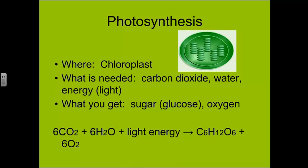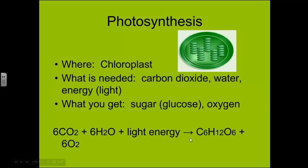Let's go through the very basic who, what, when, where. Photosynthesis happens in the chloroplast, and it needs carbon dioxide, water, and some energy. What you get back out are sugars — which is glucose — and oxygen. The chemical equation is: six CO2 molecules plus six H2O molecules plus some light energy gives us one sugar molecule and six oxygens.